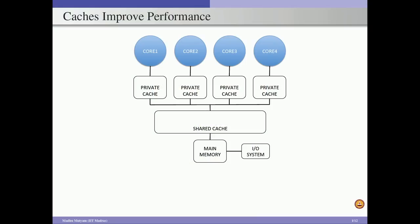In multi-core systems we have multiple cores, and each core will have one or two levels of cache hierarchy as a private cache. There is also a shared cache shared by all the cores. Each core has a set of private caches, and there is a shared cache, main memory, and I/O system. In this example we consider two levels: level 1 cache private to each core, and level 2 cache shared across all cores.